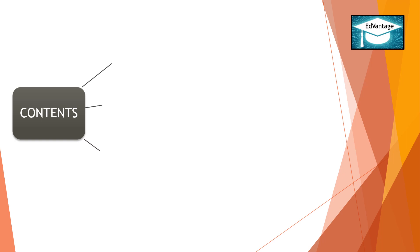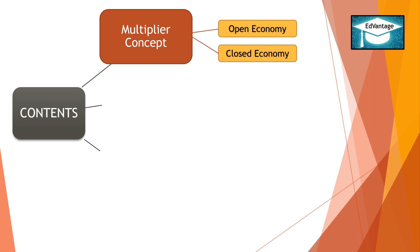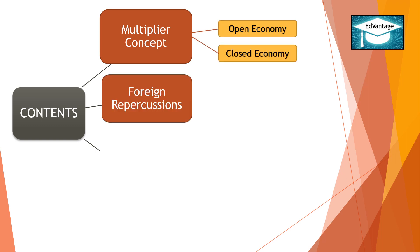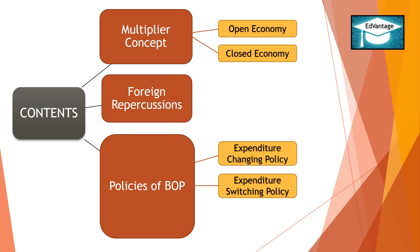This chapter is divided into three parts: 1. The Multiplier Concept in the case of Open Economy and Closed Economy. 2. Foreign Repercussions. 3. Policy of BOP — that is Expenditure Changing Policy, Expenditure Switching Policy, and lastly the different types of policy mix.